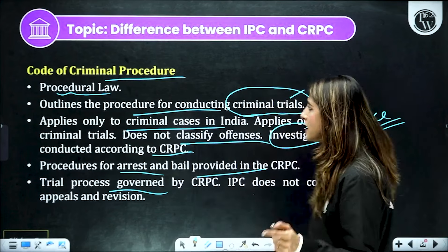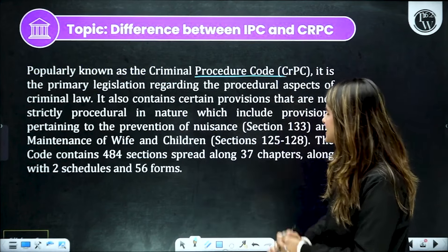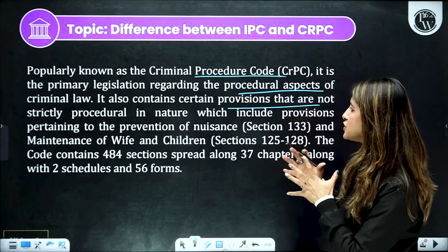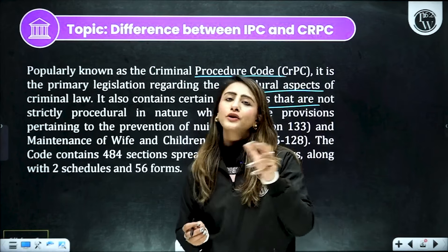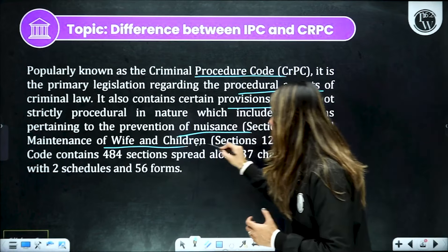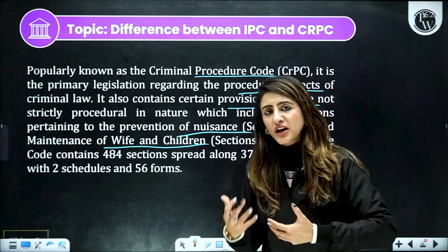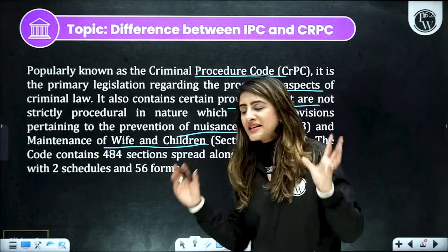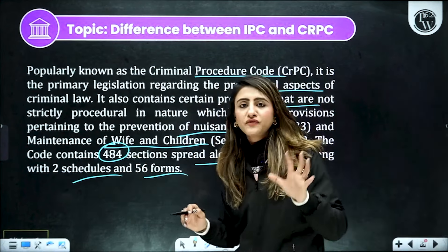IPC does not cover the appeals and revisions. CrPC, popularly known as CrPC, is the primary legislation jo procedural aspects record karta hai. Ye contain karta hai certain provisions jo kabhi-kabhi procedural in nature nahi bhi hote hain — jaise for example, kuch aisi cheezein mention hain CrPC mein jo definition nature ki hain. For example, prevention of nuisance jo section 133 mein hai; maintenance clauses jo section 125 se 128 mein hain — matlab jab kabhi bhi divorce ke cases hoti hain, toh vahaan par wife aur bachche ka kya maintenance rahta hai, woh bhi CrPC law ke section 125 to 128 mein mention hai. Totally CrPC mein 484 sections hain, jo 37 chapters mein spread kiye gaye hain. Ismein two schedules hain aur saath hi 56 forms bhi hain.